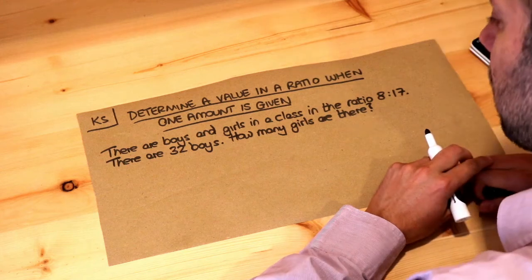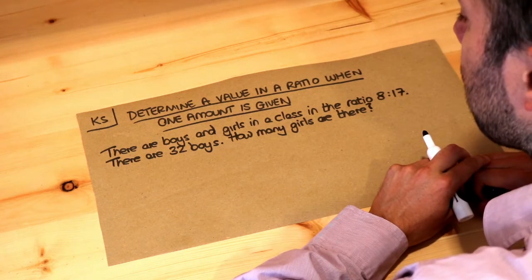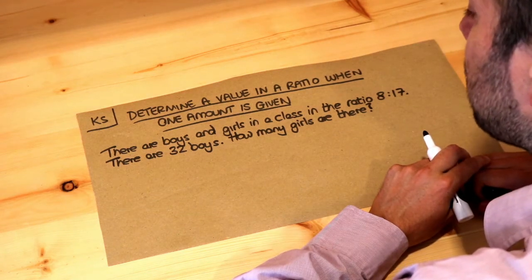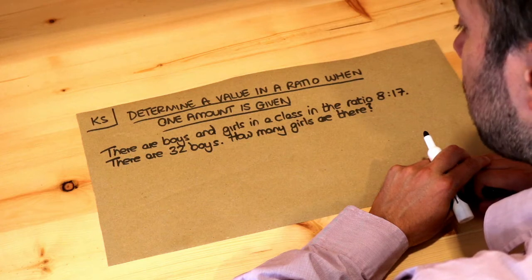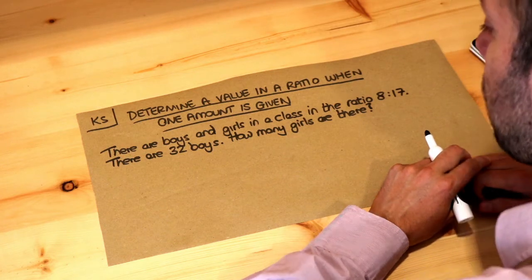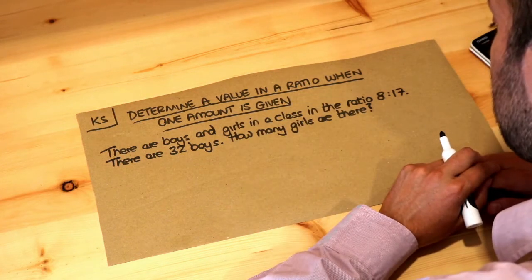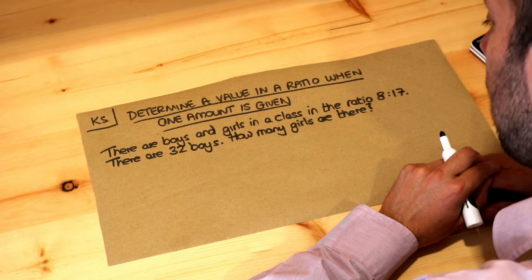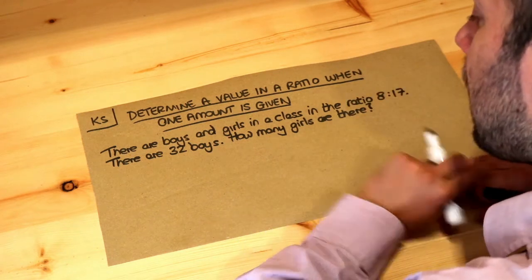Hello and welcome to this Dr. Ross Maths key skill video on determining a value in a ratio when one amount is given. Here's the question: there are boys and girls in a class in the ratio 8 to 17, so a lot more girls.